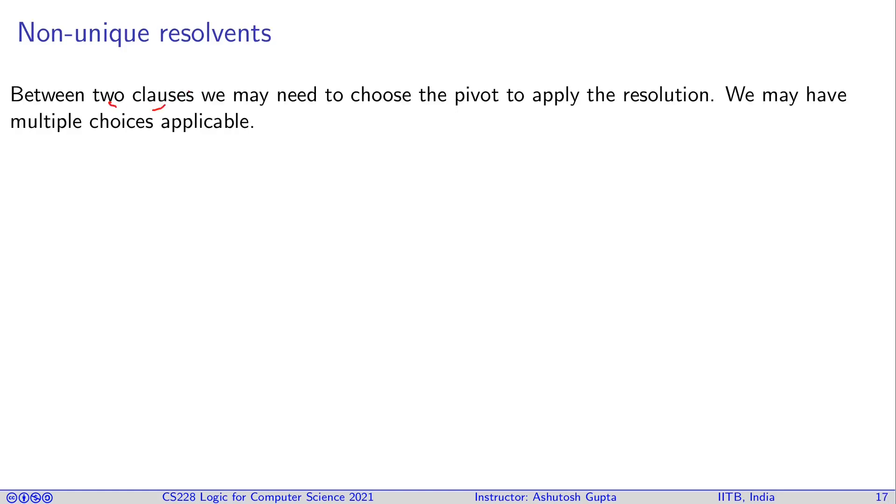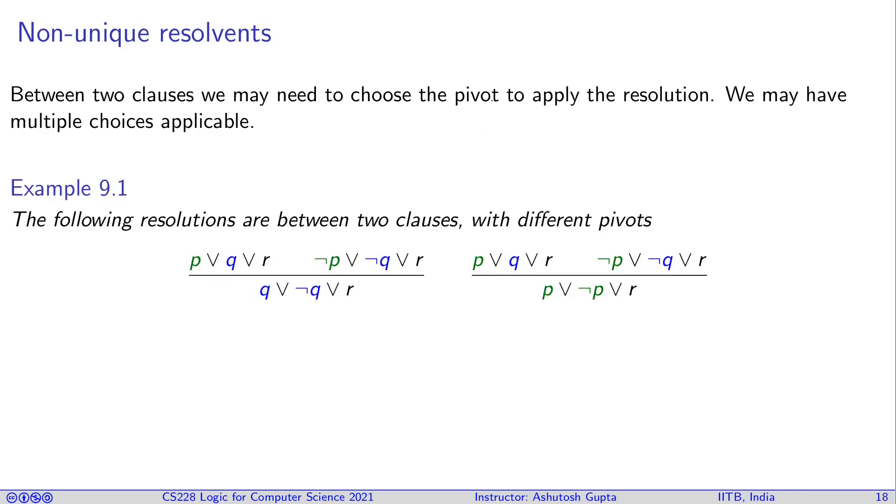If you have two clauses available to you and you want to do resolution between them and obtain a new clause, you need to choose the pivot variable. Now the question is, is it possible that you have more than one choice to choose from? Let's look at an example when it is possible and we will see it is a non-problem.